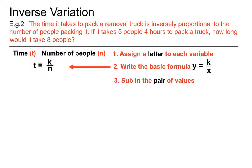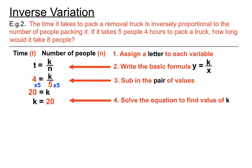The next step is to sub in the pair of values. Five people in four hours are grouped together, so I'm going to use that as my pair of values. I'm going to put 4 where the T is and 5 where the N is. To get k on its own, I multiply both sides by 5. Four times 5 is 20, so k equals 20. We've found the value of k by subbing in that pair of values.